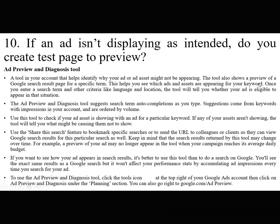This helps you see which ads and assets are appearing for your keyword. Once you enter a search term and other criteria like language and location, the tool will tell you whether your ad is eligible to appear in that situation. The tool suggests search term auto-completions as you type; suggestions come from keywords with impressions in your account and are ordered by volume.